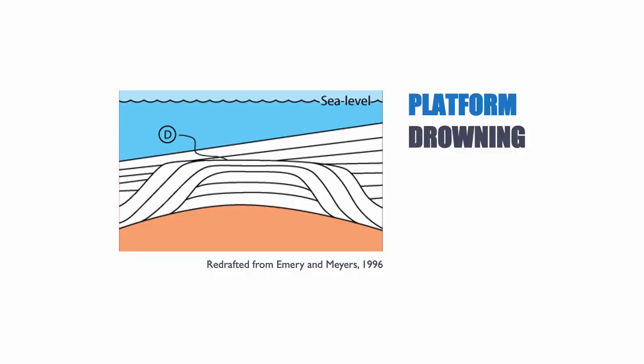Something that also happens in carbonates: if the system cannot keep up or catch up with sea level, eventually it drowns. Imagine base level is rising very fast and ecological conditions are less than ideal for carbonates — for autotrophs. Maybe there's too much nutrient, the turbidity of the water is not ideal, or the water temperature is too cold. Carbonates grow but not fast enough, so each generation finds itself a little bit deeper because base level is rising faster than it can catch up. Being deeper means less light, and less light means less growth.